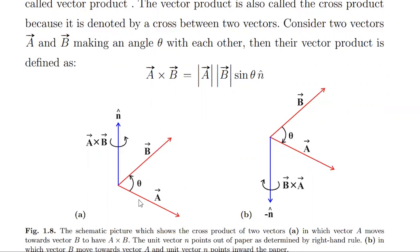If we want to multiply a to b, we rotate vector a into vector b and the erected thumb gives the direction of the resultant. Similarly, if we multiply b to a, we invert the right hand downward and move from b to a, then the erected thumb points downward. That is why we take the sign as minus, because this is a vector product — the resultant is again a vector. We write the direction as n̂. Simply, this product is defined as: if the multiplication of two vectors gives a resultant vector, we call it a vector product.